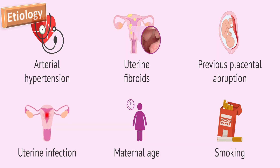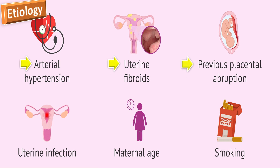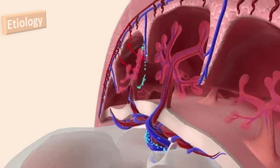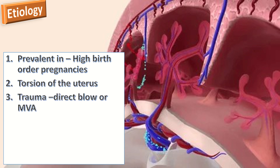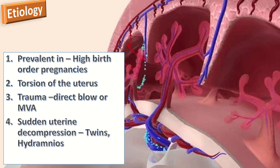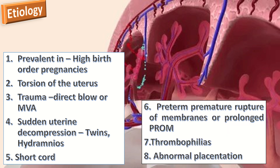The etiology of abruptive placenta includes arterial hypertension, uterine fibroids, previous placental abruption, uterine infarction, maternal age, and smoking. Placental abruption is prevalent in high birth order pregnancies. Other causes include torsion of the uterus, trauma or a direct blow or MVA, sudden uterine decompression as in cases of twins and hydramnios, short cord, preterm premature rupture of the membranes or prolonged PROM, thrombophilias, and abnormal placentation.